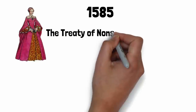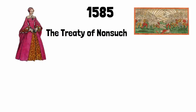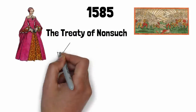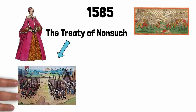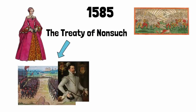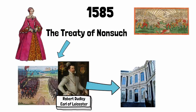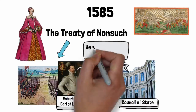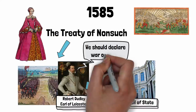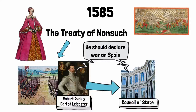In August 1585 Elizabeth signed the Treaty of Nonsuch with the Dutch rebels. This treaty promised that Elizabeth could pay for an army of over 7,000 English soldiers who would be led by one of Elizabeth's favourite courtiers, Robert Dudley, the Earl of Leicester. The plan was that he would work with the rebel government known as the Council of State. This brought the two countries closer to war because it was possible that the Council of State, supported by Dudley, would declare war on Spain.